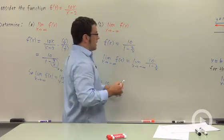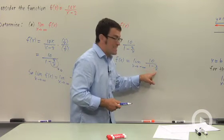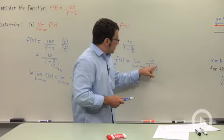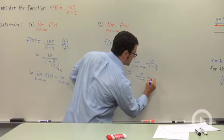That's a negative. Now, as x approaches negative infinity, this quantity is still going to go to 0. So this limit is still 10 over 1 minus 0, or 10.